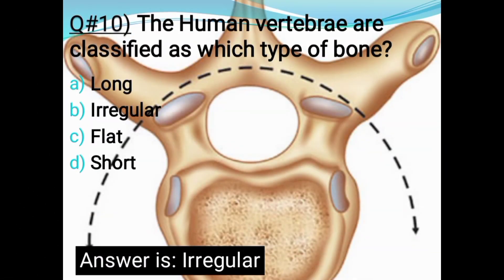Question number ten: Human vertebrae are classified as which type of bone? Options: Long, Irregular, Plate, or Short. The correct answer is Irregular bone.